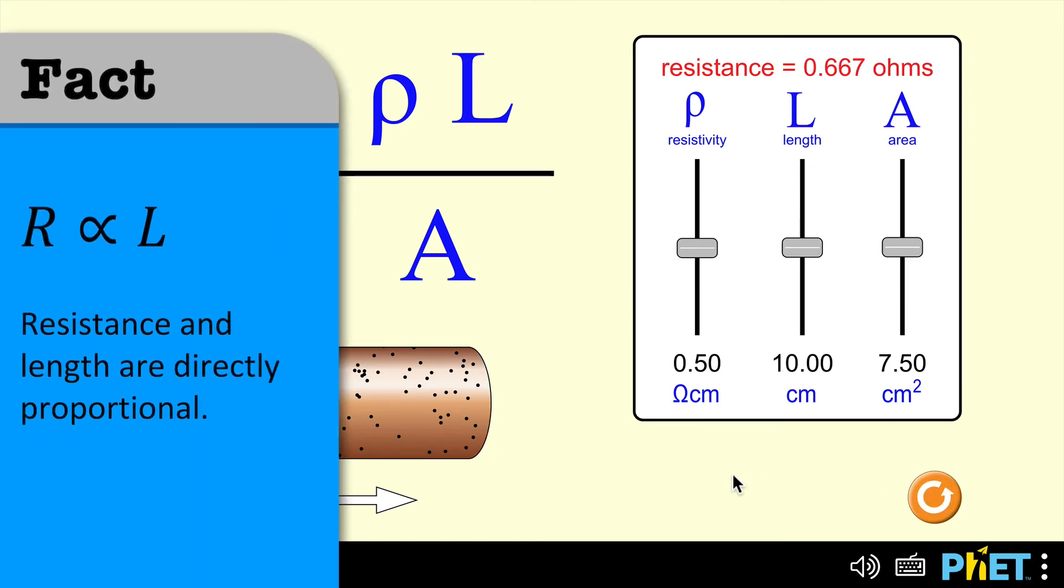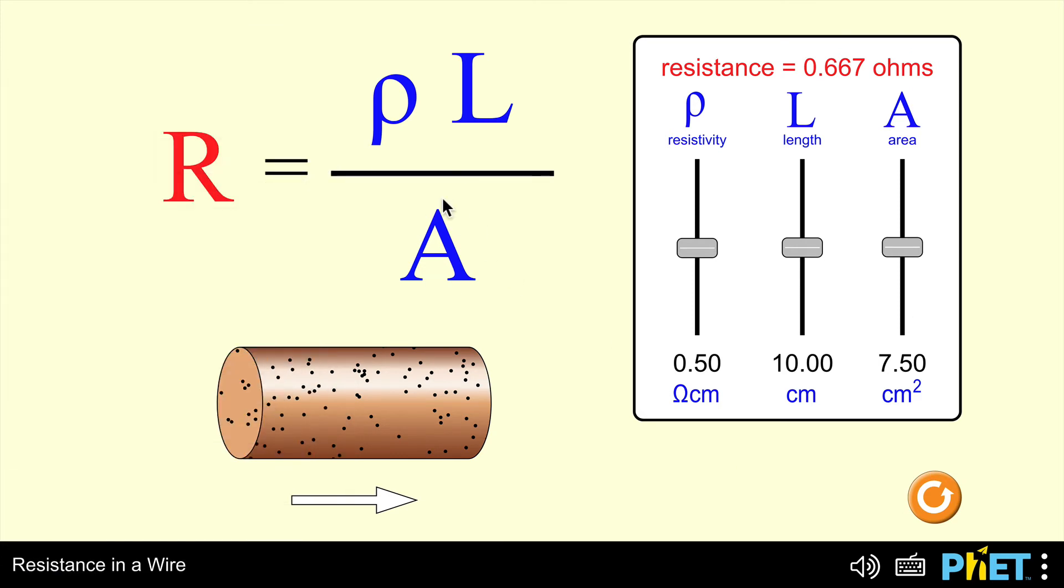Reset again, and we're going to look at area. Area in this equation is on the bottom line, and you should understand if I increase this area, because it's on the bottom line, I'll be dividing by a larger and larger number. So, the right-hand side overall will get smaller, and that means that as area increases, the resistance should decrease. Let's see if that's the case.